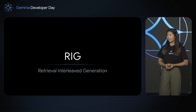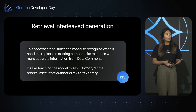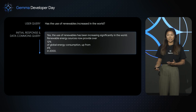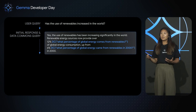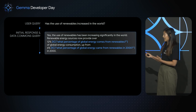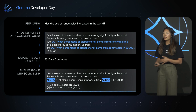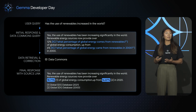Let's look at Retrieval Interleave Generation. In this approach, we fine-tuned the model to recognize when it needs to replace an existing number in its response with more accurate information from Data Commons. For example, given a user query like 'Has the use of renewables increased in the world?', the base unfine-tuned Gemma answer gives statistics like renewables were at 6% in 2000 and 12% currently. In our fine-tuned model, we return the same response but add an annotation alongside each statistic to call Data Commons and retrieve updated data. We then replace the original numbers with the new ones from Data Commons, along with the original source. So 12% became 18% and 6% became 16%, and both numbers came from the global SDG database.